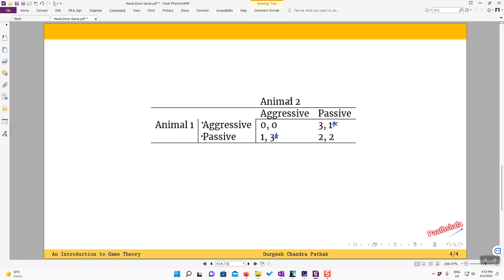Similarly, let's pick the stance of animal two and see that what should animal one do. If animal two is aggressive, then it is better for player one to be passive. That gives him one compared to zero.